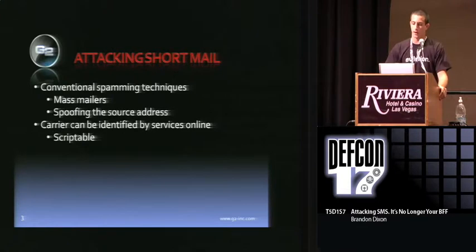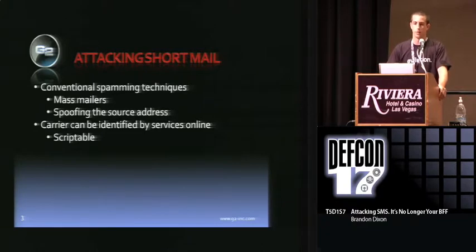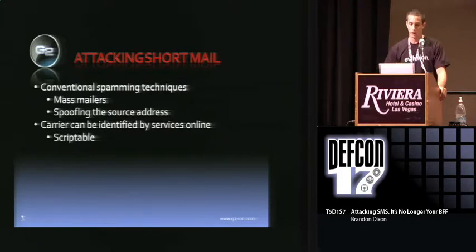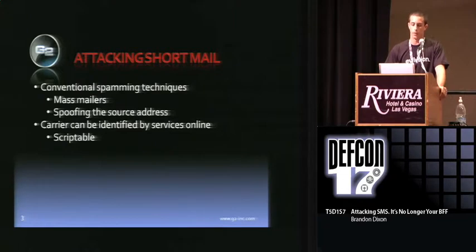Attacking short mail: you have the conventional spamming techniques that are already out there today — mass mailers. In email you get flooded with spam all the time. So the only thing that spammers and mass mailers have to do is actually change the target list inputted into these mass mailers. I'll get more on that later about creating those victim lists. Another spamming technique you can use with this short mail attack is that you can actually spoof the source address.